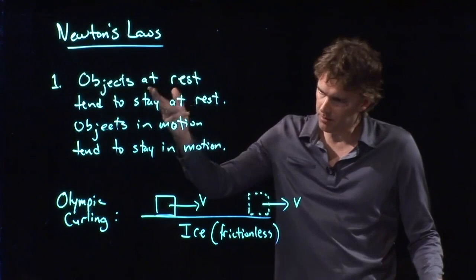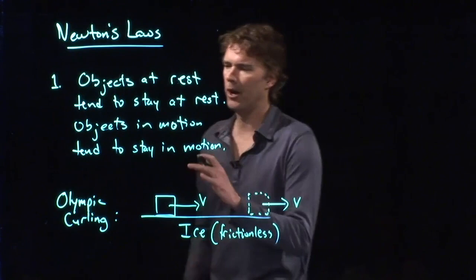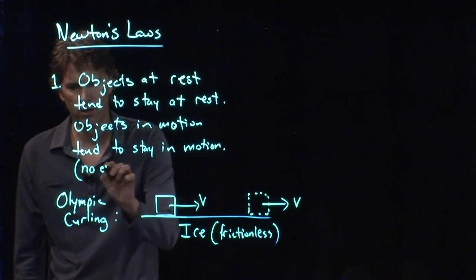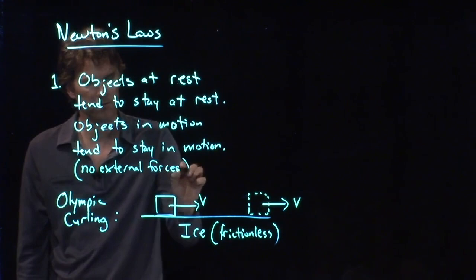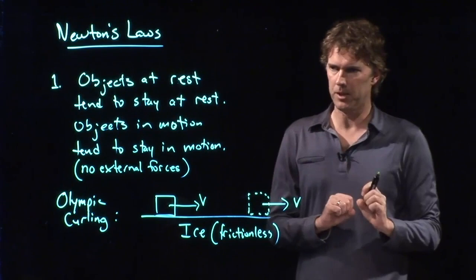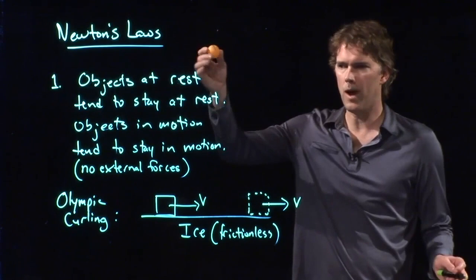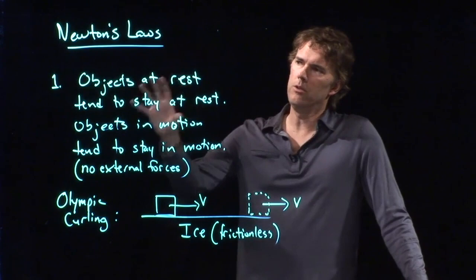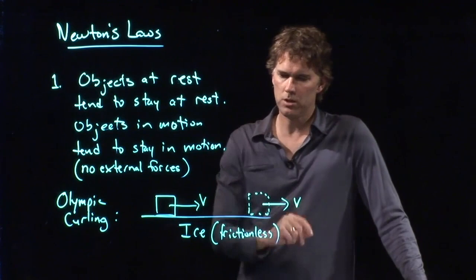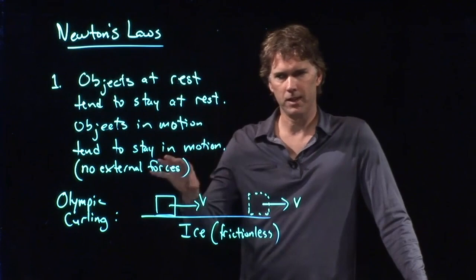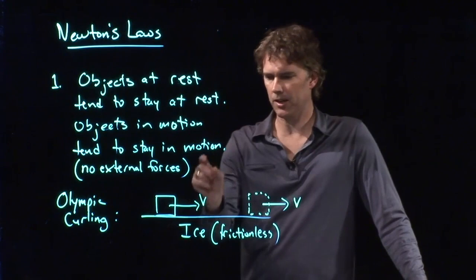Objects in motion tend to stay in motion. And so really what we should add is this caveat: no external forces. There's nothing trying to slow it down, nothing trying to speed it up. Obviously, in the example of the ping pong ball dropping, we do have an external force — gravity is trying to pull it down. So Newton's first law is really about no external forces. If I put that stone on the ice and leave it at rest, it will stay at rest. If I push it and it gets velocity V, then it will keep velocity V for a long time.